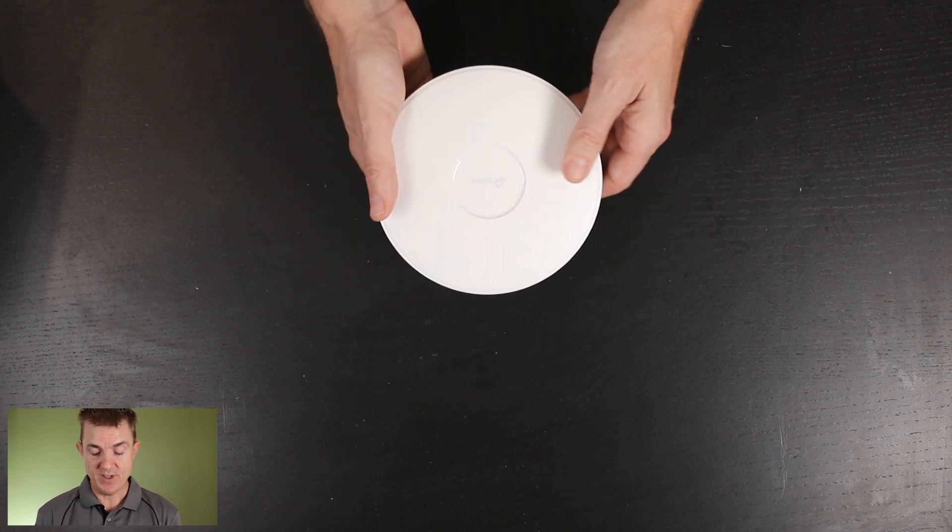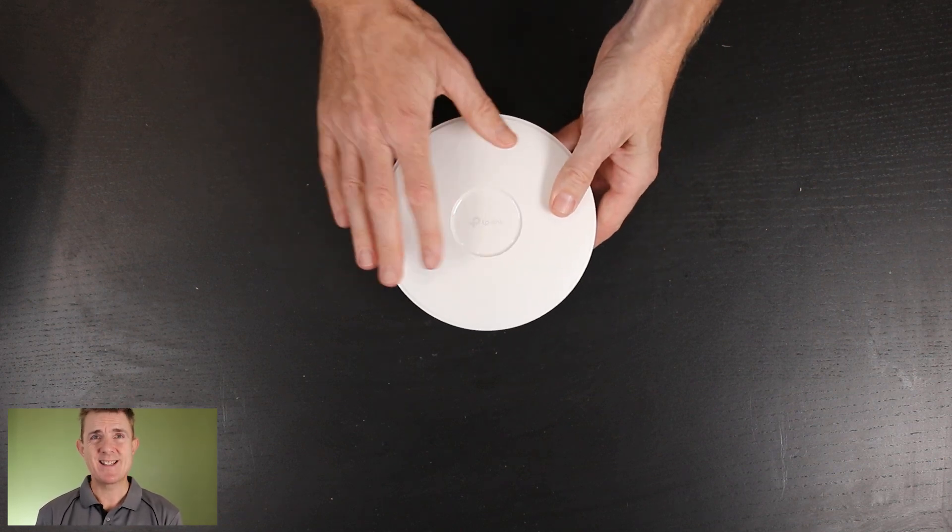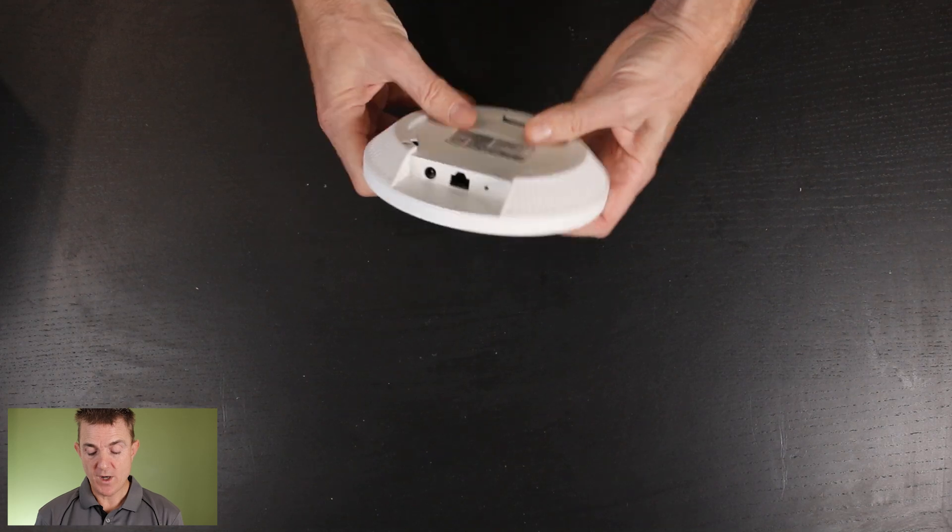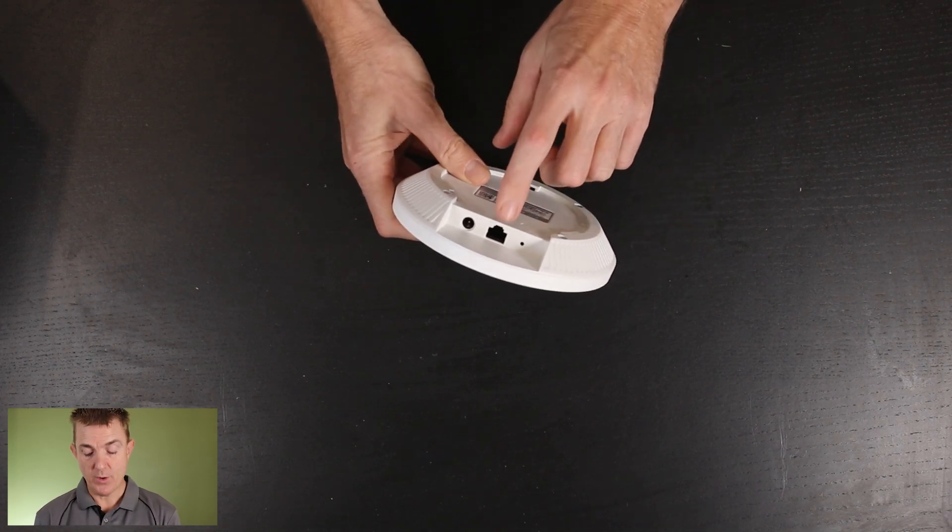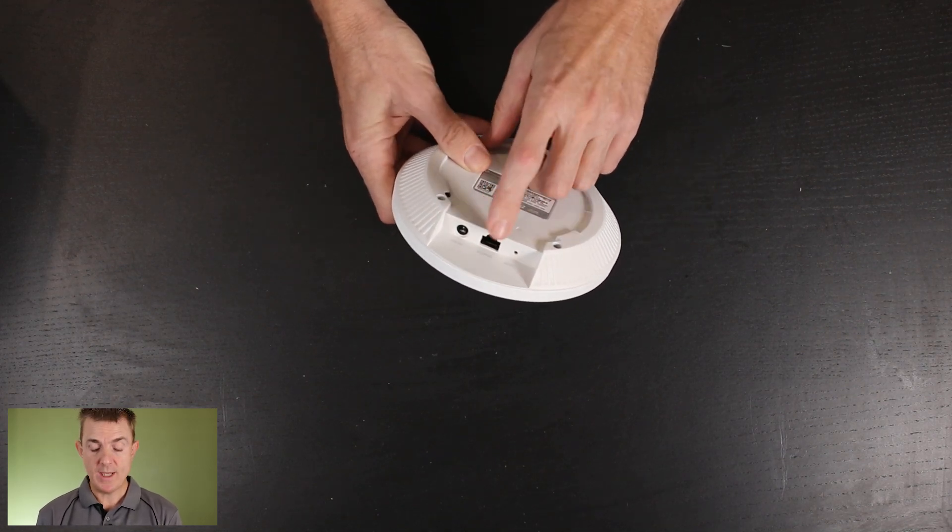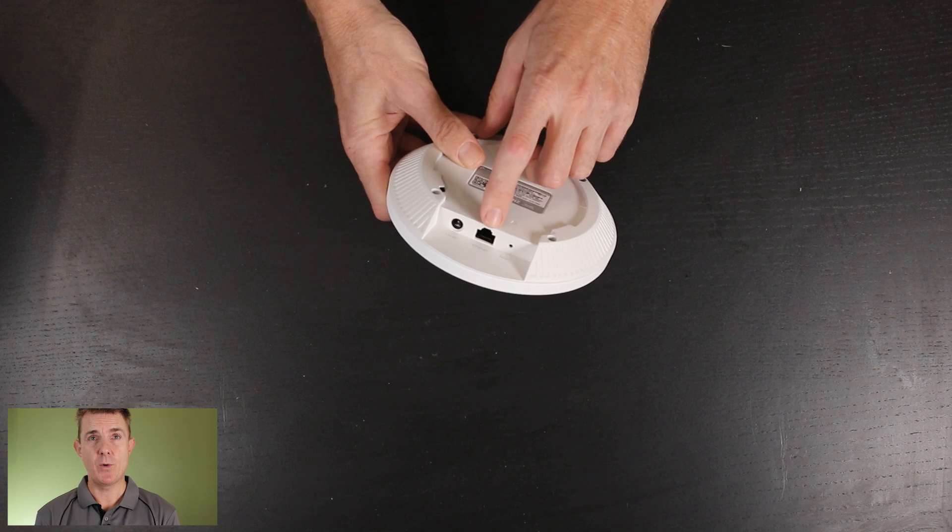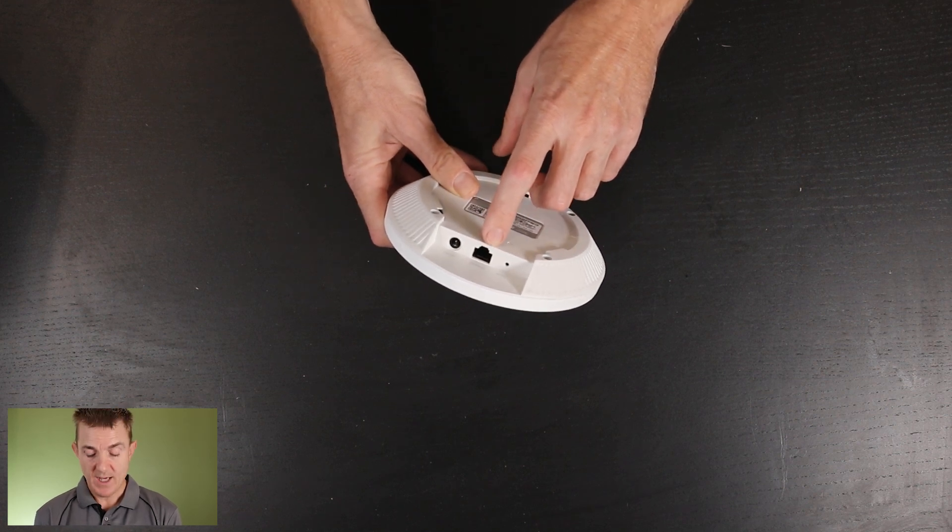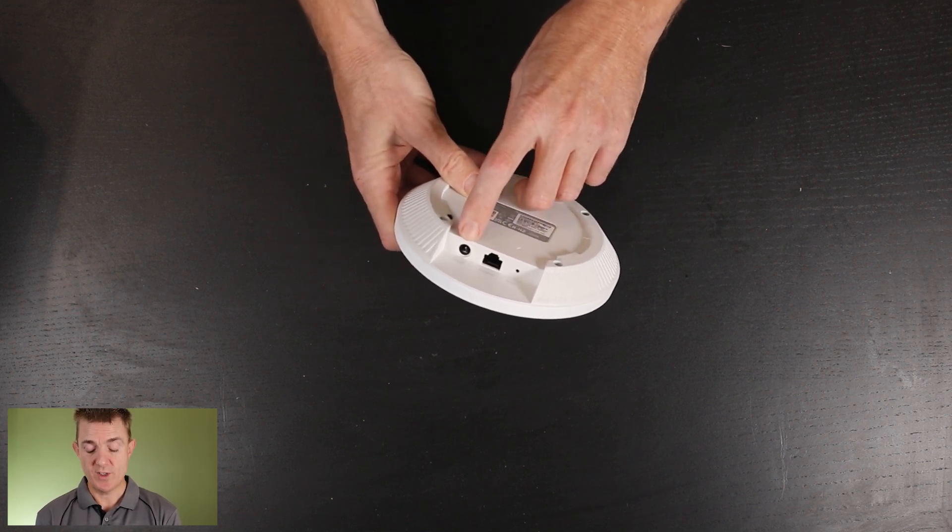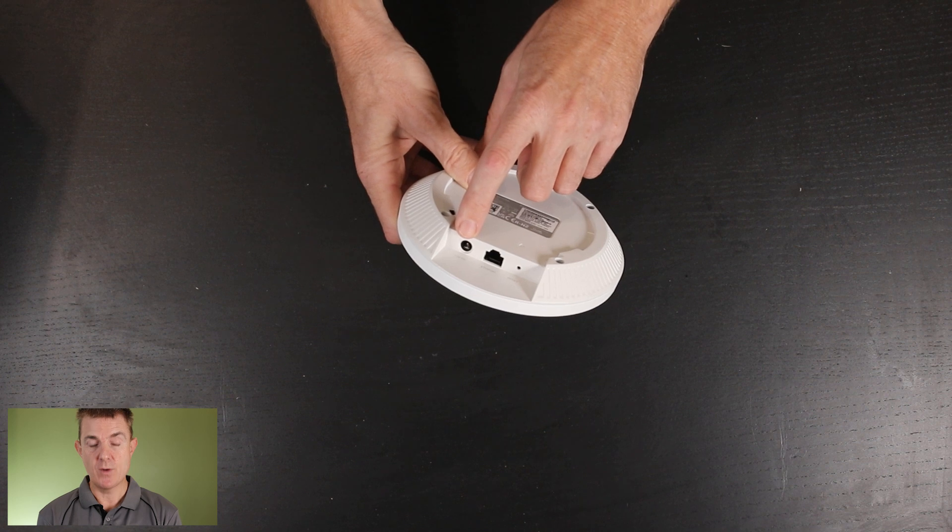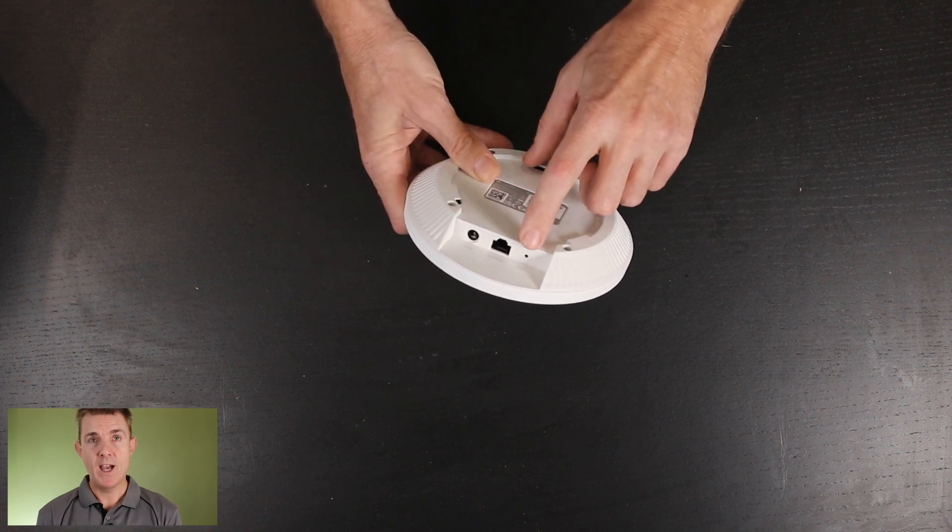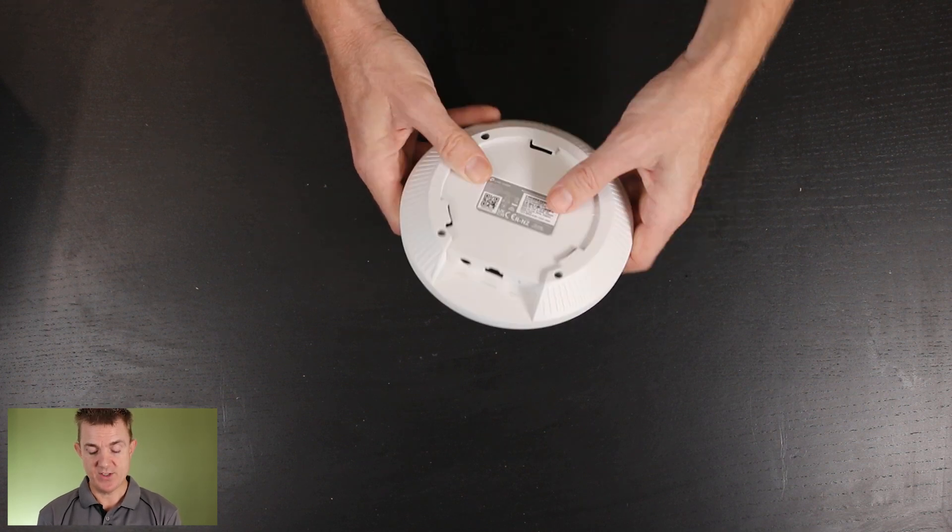And then you're going to get the device itself. So like I said, this is a Wireless 7. It's got a 2.5 gigabit per second ethernet port on here. It's a PoE powered device. It needs at least PoE plus to run. You'll see we have the option also for a 12 volt power pack. You can buy those optionally extra if you don't want to do PoE. And you've got our reset on this side.